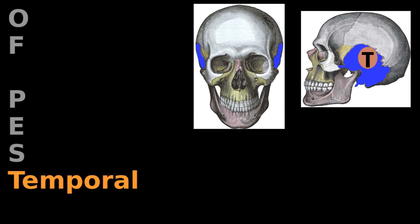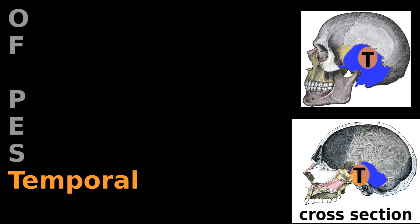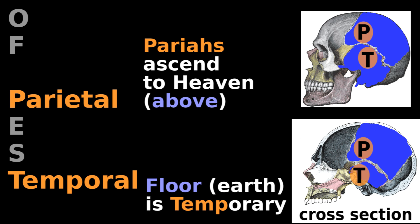The temporal bones are around where you would massage your temples for a headache. The pair of temporal bones are easy to distinguish from the pair of parietal bones, because the floor is temporary but pariahs ascend to heaven.